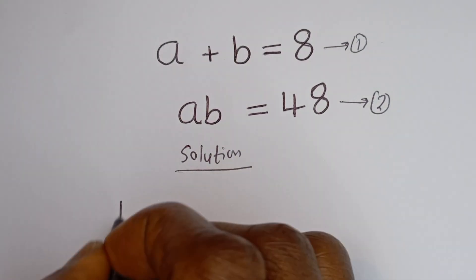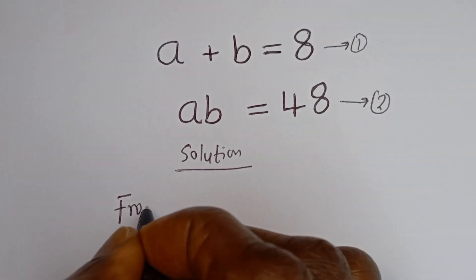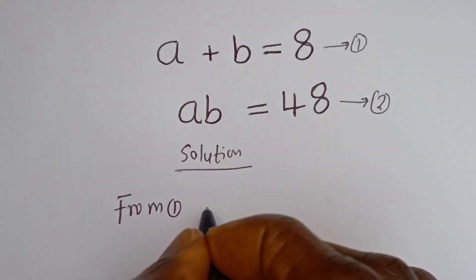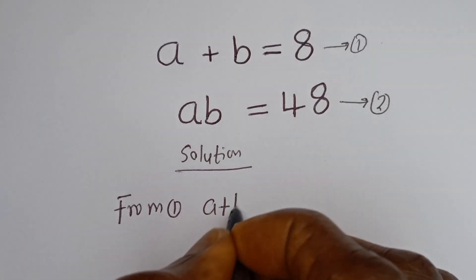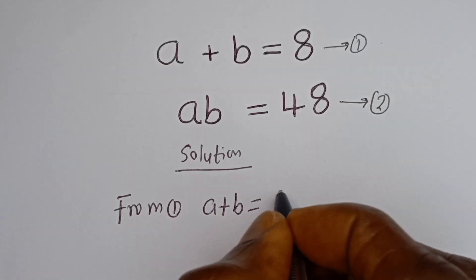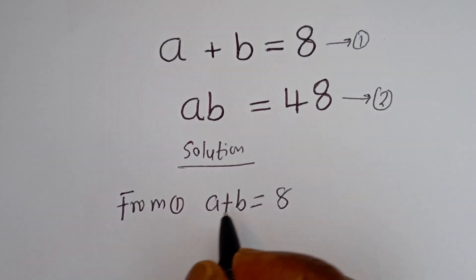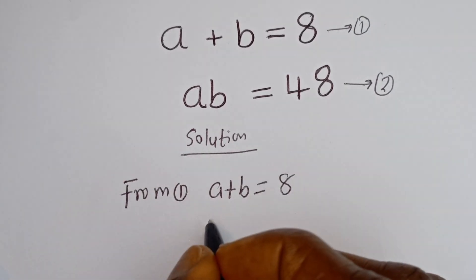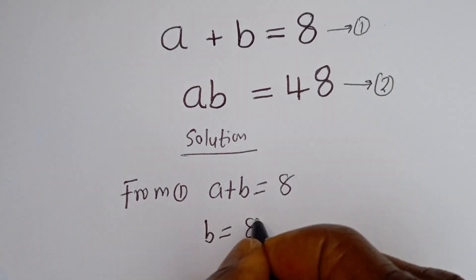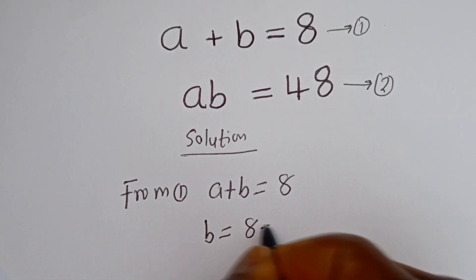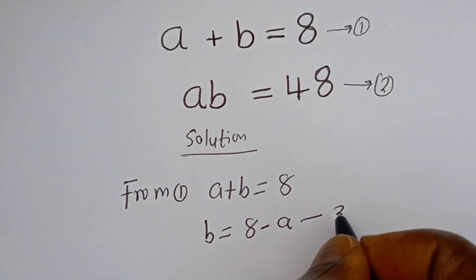From equation 1, A plus B is equal to 8. Let's make B the subject of the formula: B is equal to 8 minus A. Let's call this equation 3.